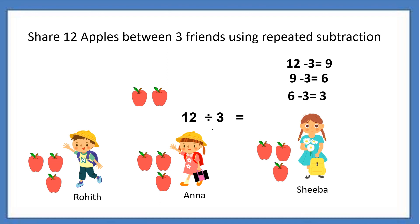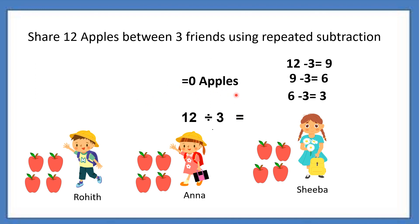Now repeat again. First apple again to Rohit, the second apple to Anna, and the third remaining apple to Sheba. So now how many apples are here? No apple — 0. That means out of these 3 apples, we have shared the 3 apples equally to Rohit, Anna, and Sheba. That means 3 minus 3 is 0 apples.